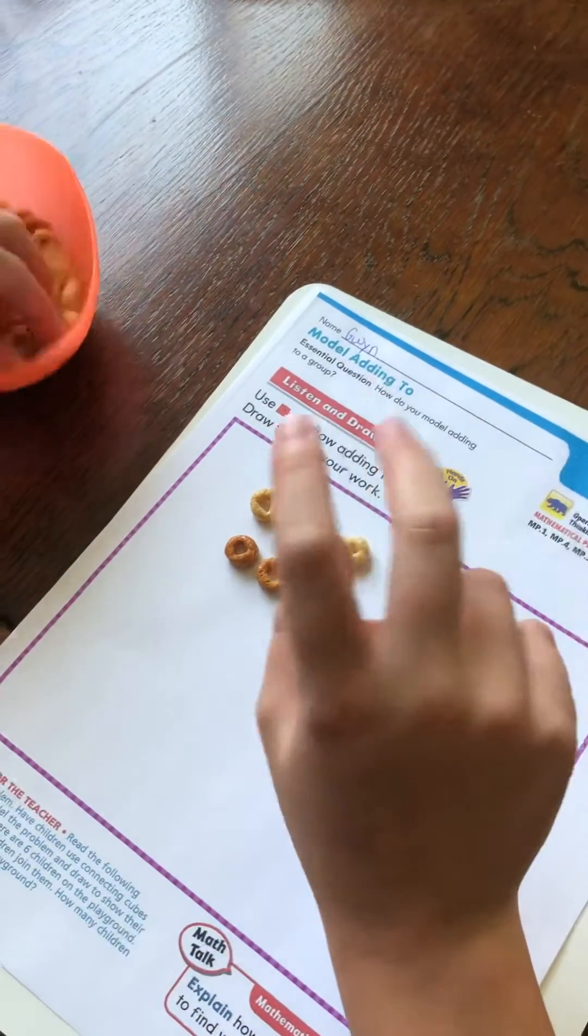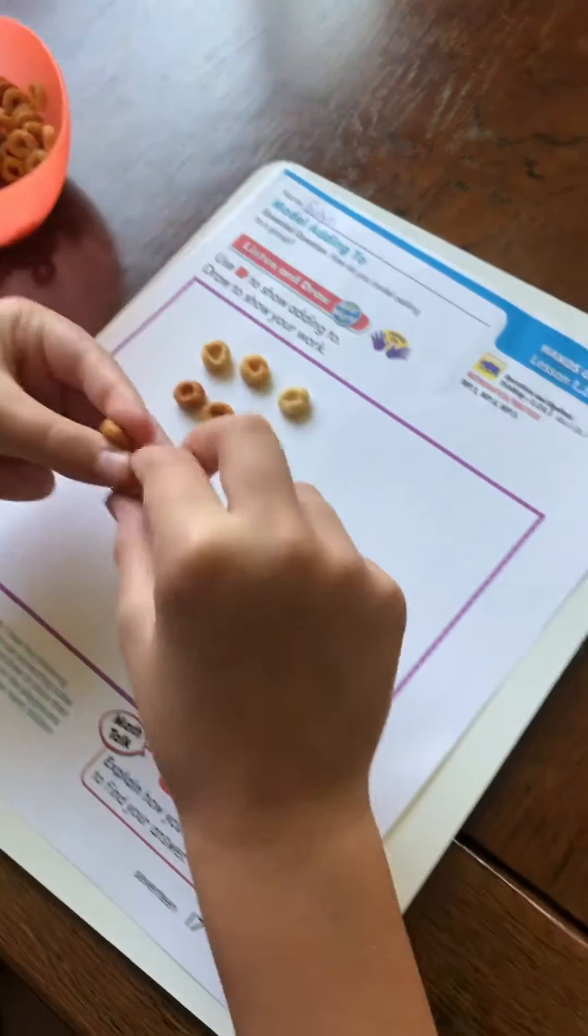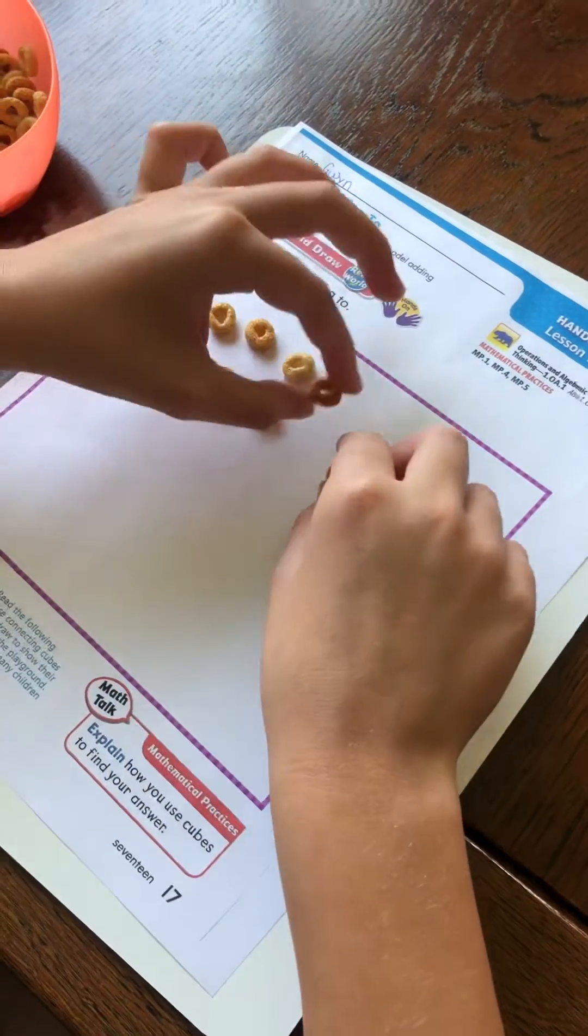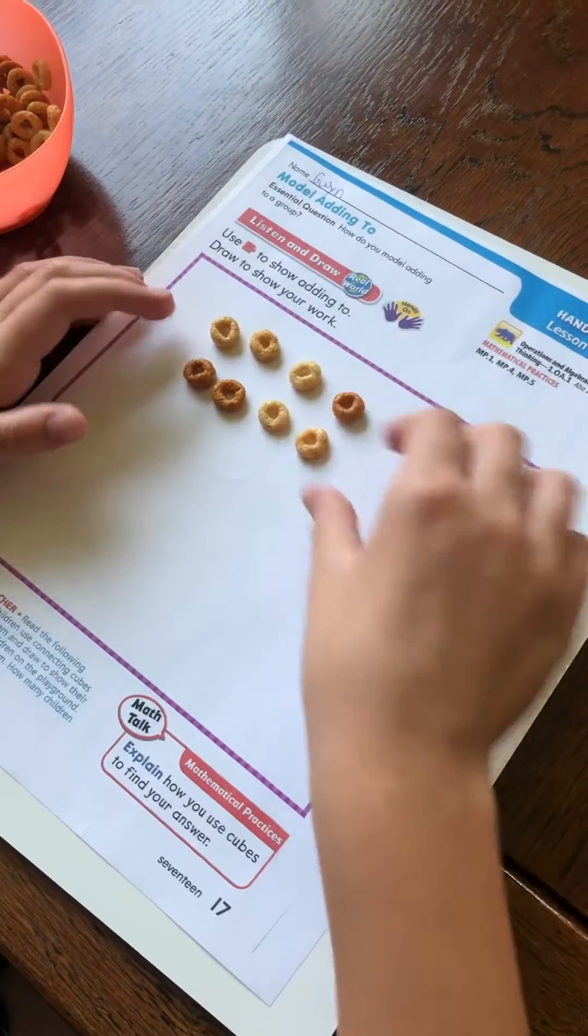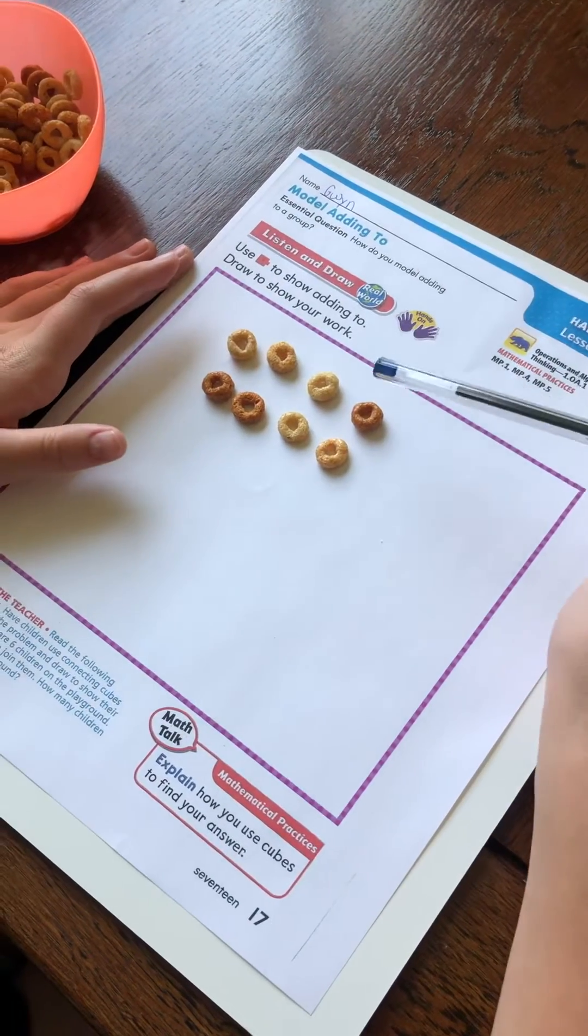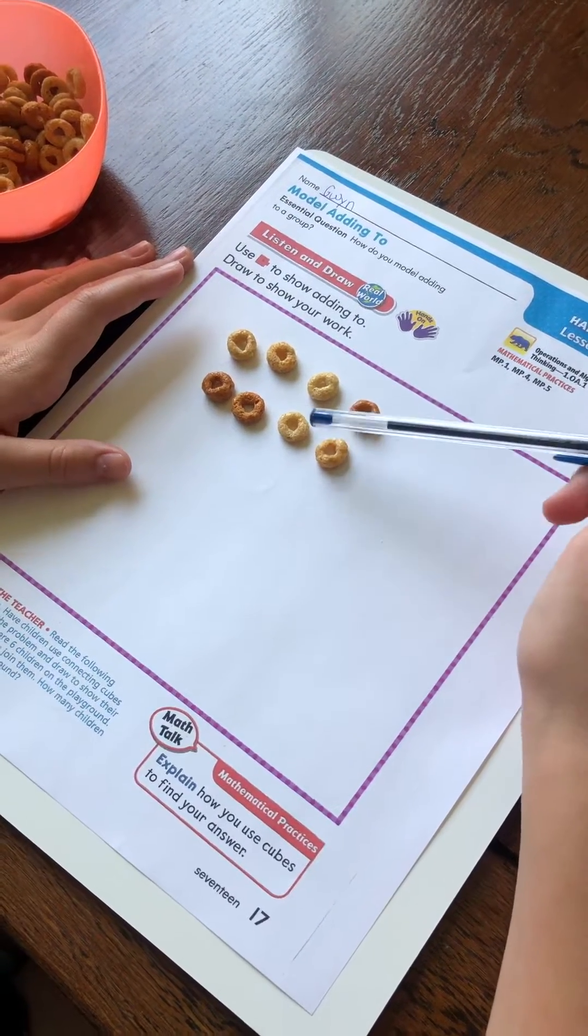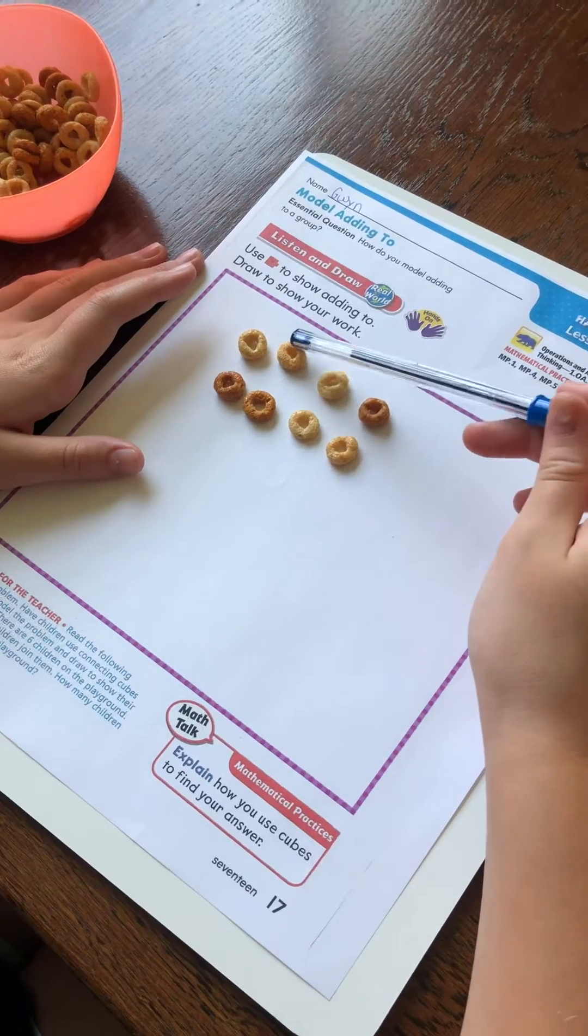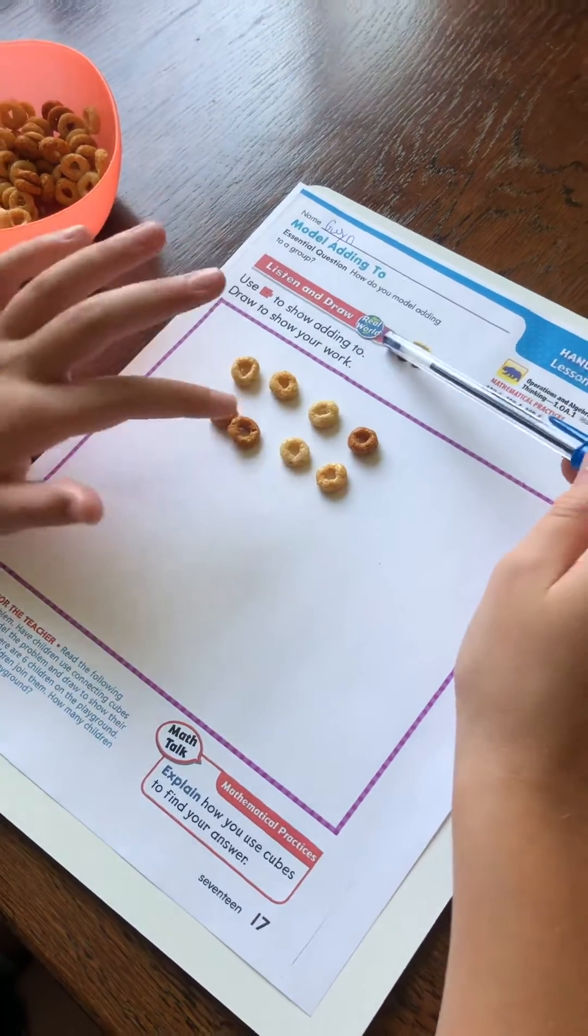But then it said two more people join them, so now I'm gonna grab two more Cheerios and put two more people there. One and two. So now I have to count them. So there's one, two, three, four, five, six, seven, eight. So now there's eight. But it says to draw to show your work, so now I'm gonna take off the Cheerios.